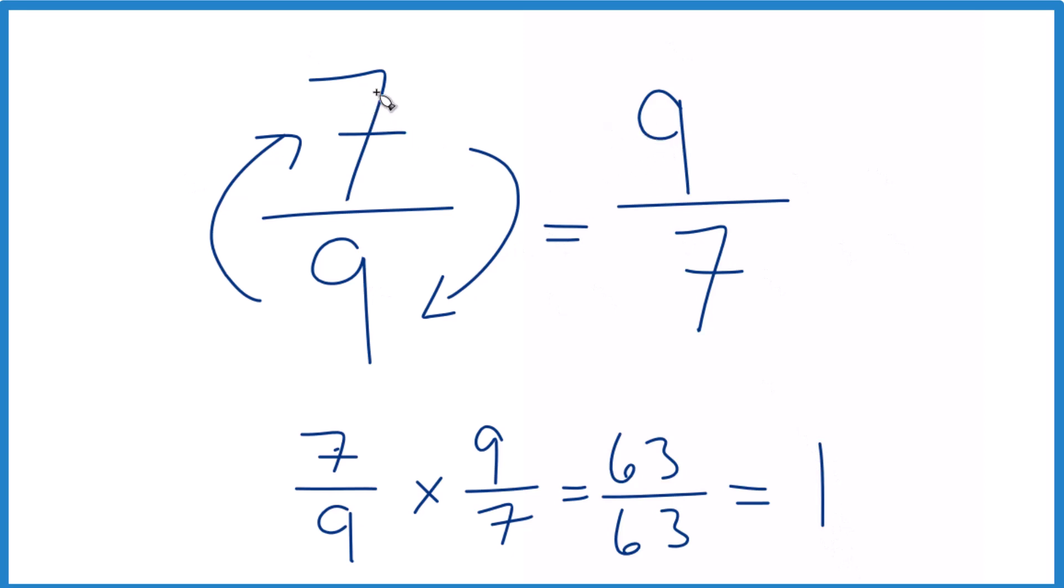The reciprocal for seven-ninths is nine-sevenths. This is an improper fraction because nine is larger than seven. You could write it as a mixed number.